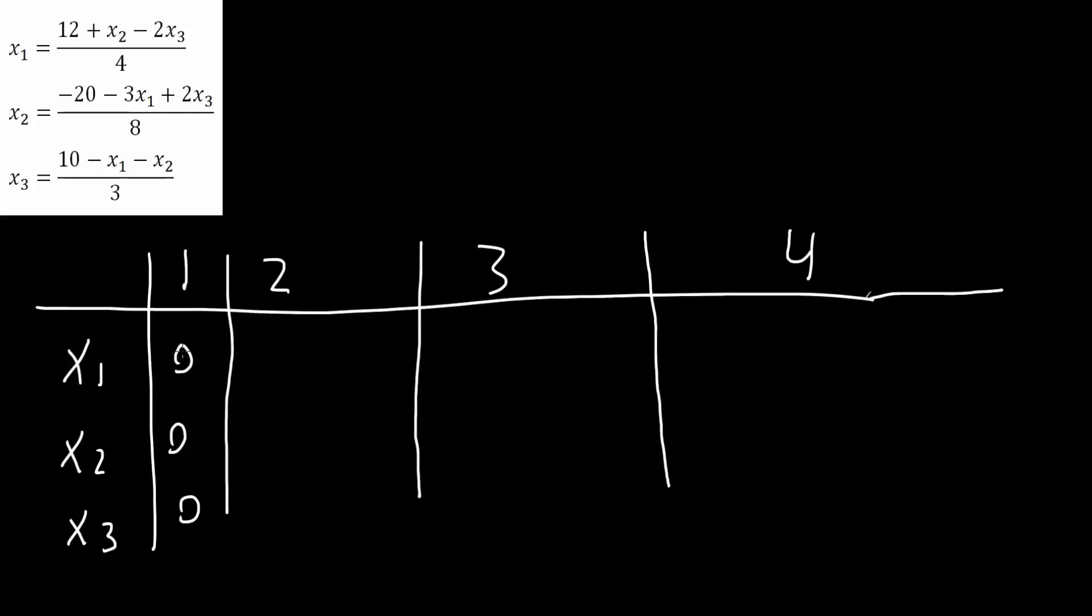So in order to get the first one, what I'm going to do here is plug in 0, 0, 0 for this equation here. So 12 plus 0 minus 0 divided by 4 would give us 3. 12 divided by 4 is 3.